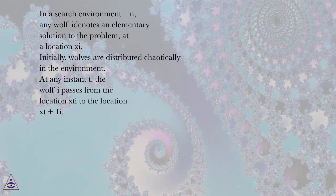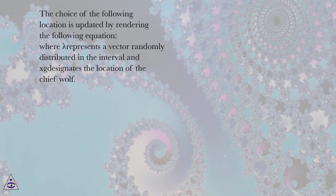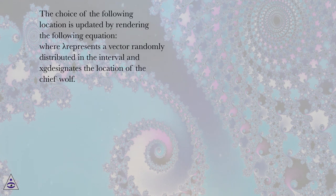At any instant T, the wolf ID passes from the location Z to the location XT plus 1I. The choice of the following location is updated by rendering the following equation. Where lambda represents a vector randomly distributed in the interval, INS designates the location of the chief wolf.